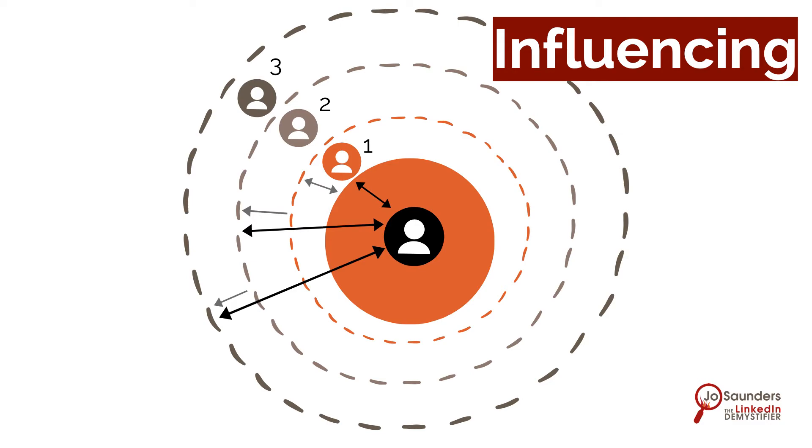So the way LinkedIn works with the three degrees in this diagram is that when you share a piece of content, your network, your first level connections, may see it in their home feed depending on the algorithm. If they do and they decide to comment on your update, they're exposing your content to their network.